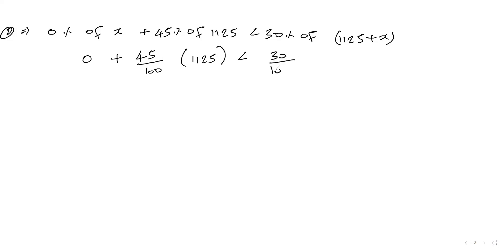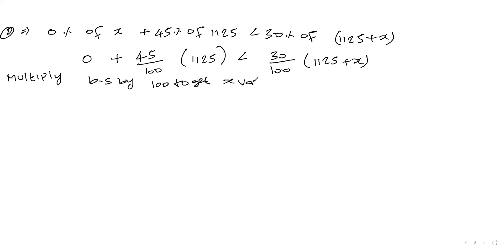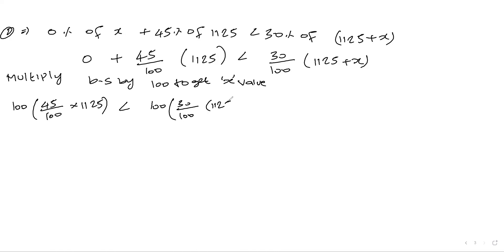Multiplying both sides by 100: 45 into 1125 is less than 30 into (1125 + x). Expanding: 45 into 1125 is less than 30 into 1125 plus 30x.